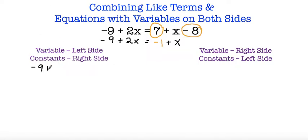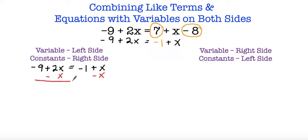So here I have negative 9 plus 2x is equal to negative 1 plus x. If I want to move all variables to the left side, the first thing I'm going to do is subtract both sides by x. Remember that subtracting by x is the same thing as subtracting by 1x. These two cancel out because they're opposites, and on the left side I'm left with negative 9 and positive 2x minus 1x. Since the signs are different we subtract, ending up with just x, and we keep the sign of the number with the greatest absolute value — which is 2 — so it's negative 9 plus x is equal to negative 1.